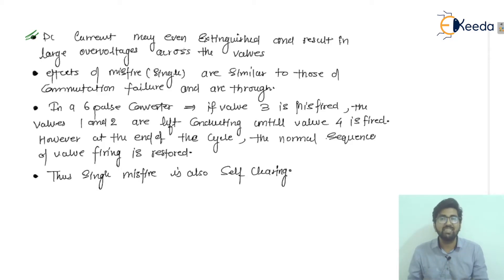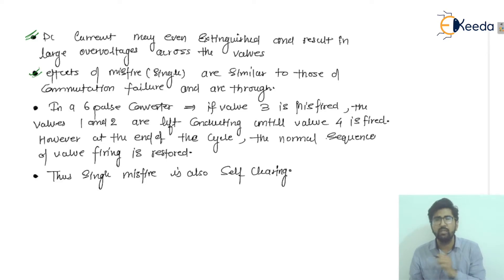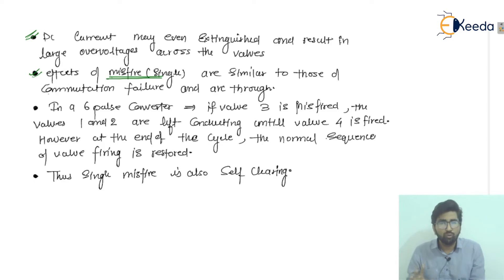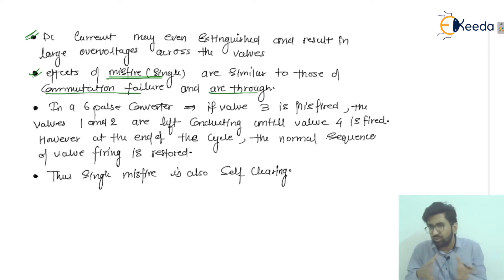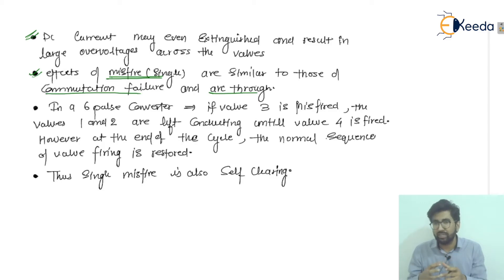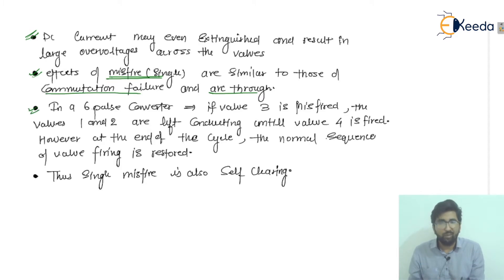If it is a single misfire occurring in one cycle, the effects are kind of similar to those of commutation failure and arc through. We have already discussed that arc through is kind of like commutation failure. So for a single misfire, the effects relate to commutation failure and are also similar to arc through.